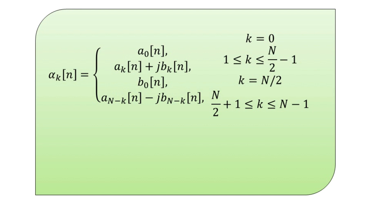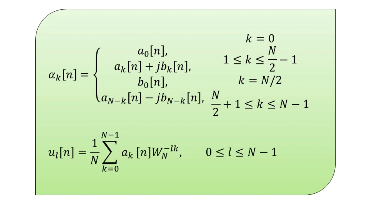Applying the Inverse Discrete Fourier Transform (IDFT), the above set of N sequences is transformed into a new set of N signals denoted u_l(n), given by: u_l(n) = (1/N) · Σ_{k=0}^{N-1} α_k(n) · W_N^{-lk}, where l ranges from 0 to N minus 1, and W_N is the twiddle factor.